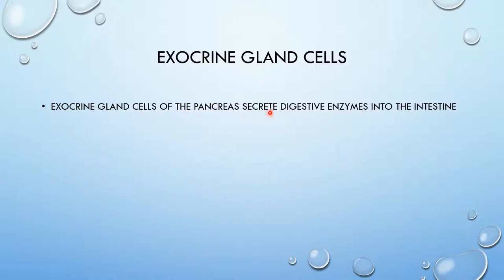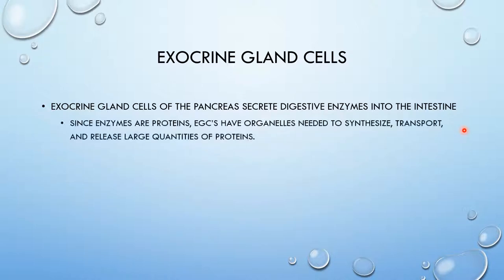Starting off with exocrine gland cells. They secrete digestive enzymes into the intestine. Since enzymes are proteins, these cells have organelles needed to synthesize, transport, and release large quantities of proteins. Now pause the video here and try to remember which organelles are involved in the synthesis, the transport, and the release of large quantities of proteins.